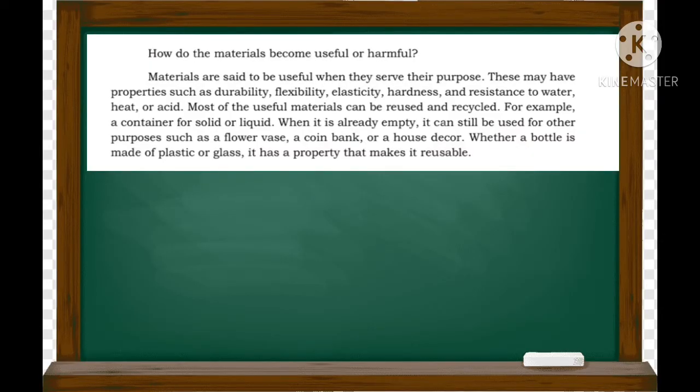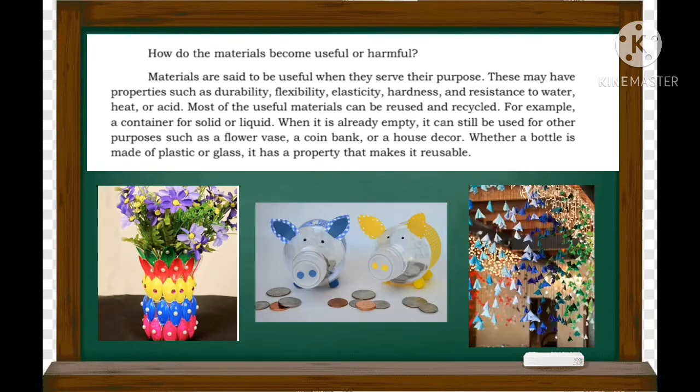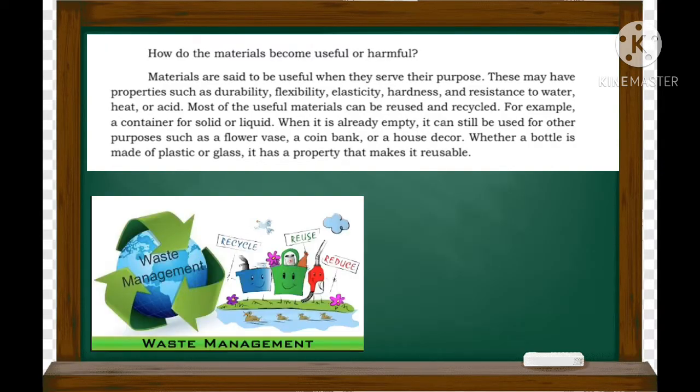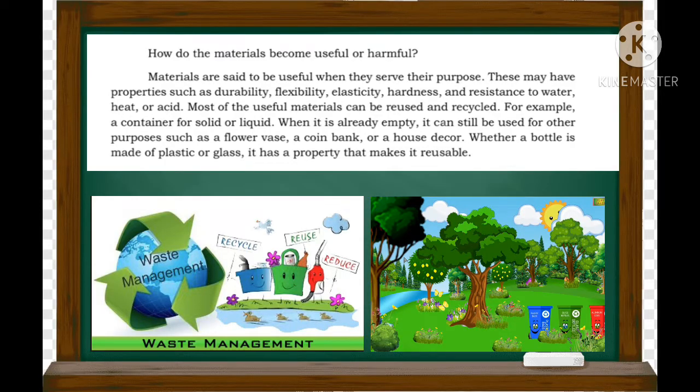How do materials become useful or harmful? Materials are said to be useful when they serve their purpose. They have properties such as durability, flexibility, elasticity, hardiness, and resistant to water, heat, or acid. Most of the useful materials can be reused and recycled. For example, a container for solid or liquid, when it's already empty, it can still be used for other purposes such as flower vase, a coin bank, or house decor. Whether a bottle is made of plastic or glass, it has a property that make it reusable. Ang mga useful materials ay ang mga bagay na ating nare-recycle pa o nare-reuse sa halip na ating itong itapon. Ang mga materials na ito ay nagiging mas kapakipakinabang sa atin na iiwasan pa ang mga polusyon at kalat sa ating kapaligiran.